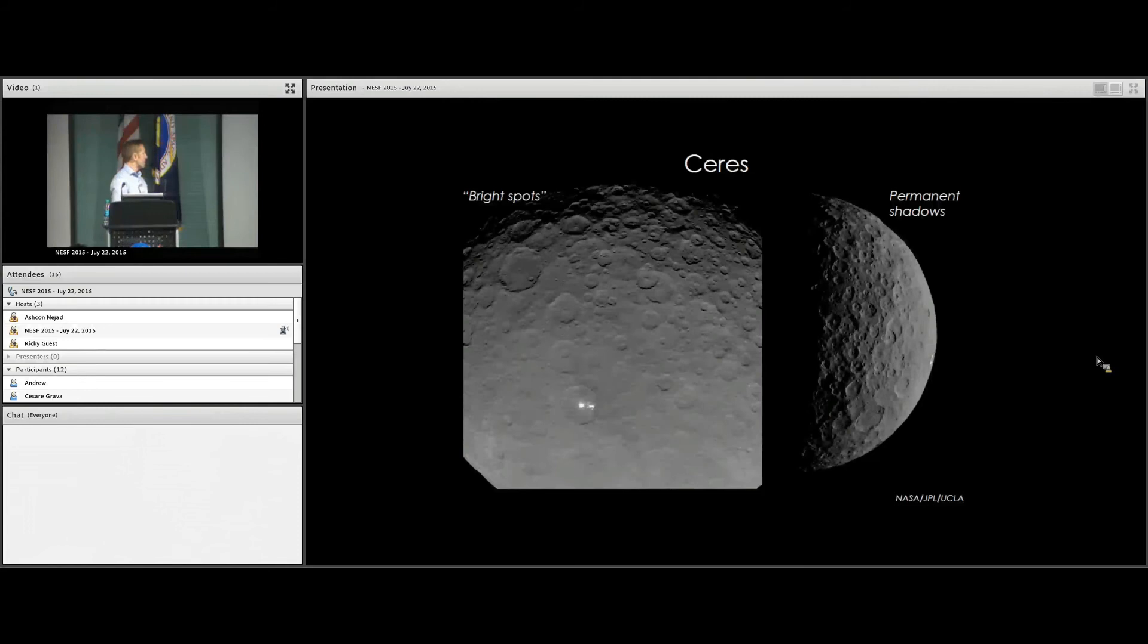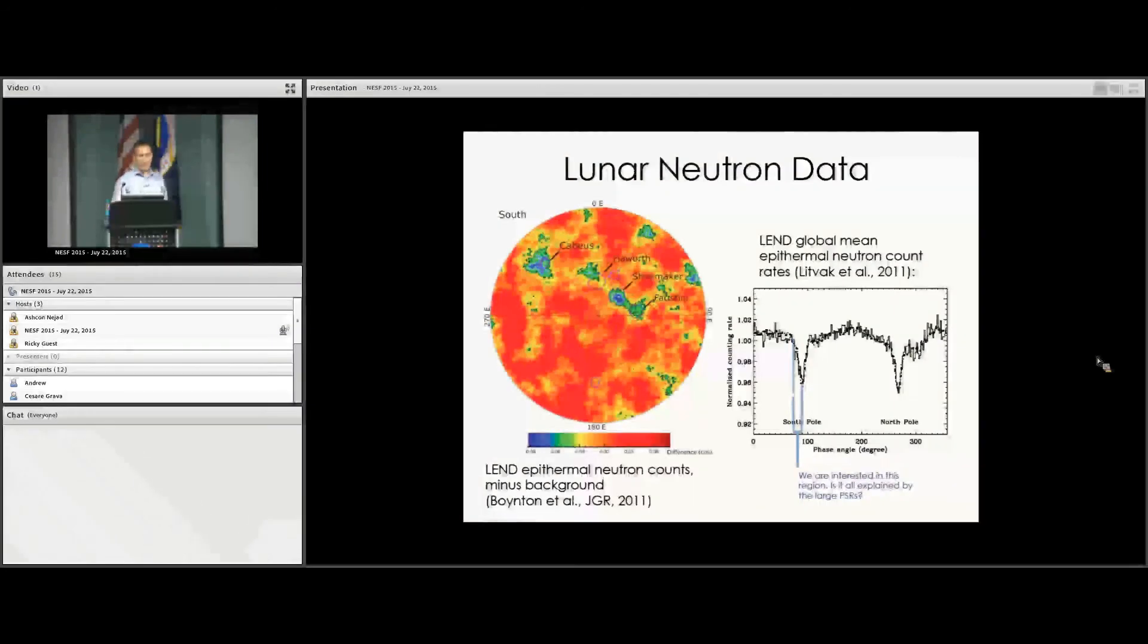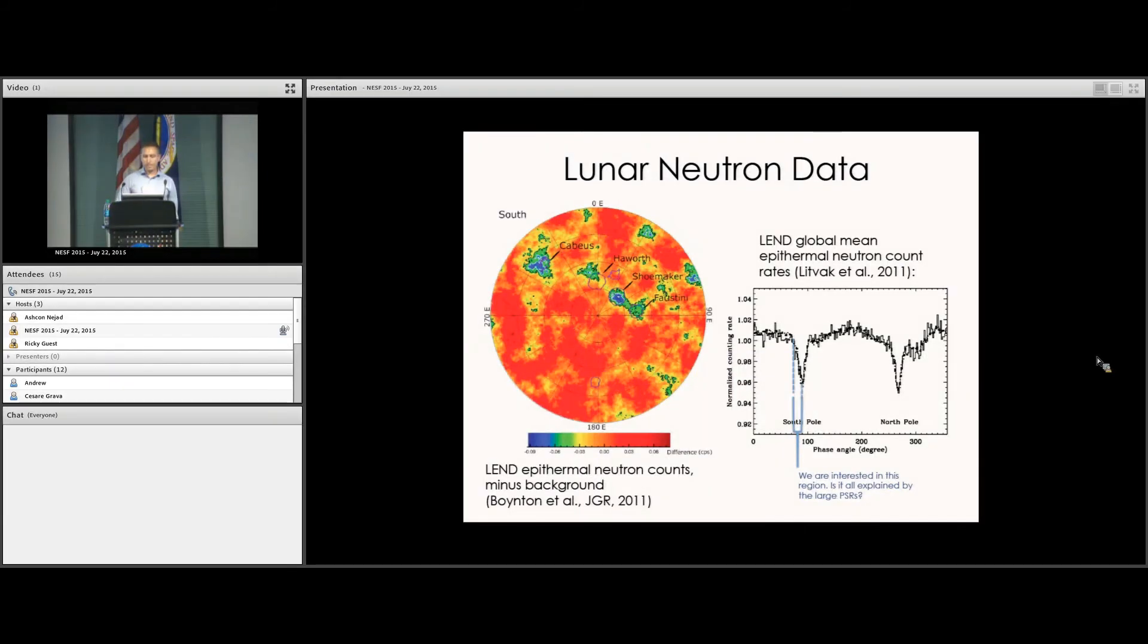Ceres may also have both subsurface cold traps and surface cold traps. We all know about the bright spots. I'm not going to claim that's water ice, although based on Chris Russell's talk earlier in the week, that was very tantalizing. The obliquity of Ceres has been maintained at three degrees probably for at least a billion years, so there's lots of permanent shadow in the polar regions that could trap water frost. I'm going to focus on the moon because that's where we have the best data, but this applies to all of those bodies I just mentioned.